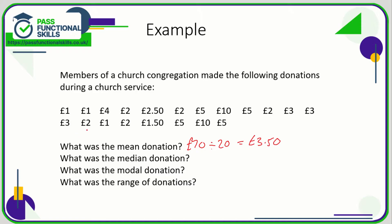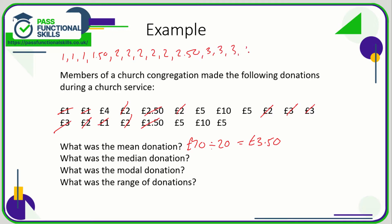For the median I'm going to put these in order. There are three donations of one pound: one, one, one. There's one pound fifty. There are five twos: one, two, three, four, five. There's also a two pounds fifty. There are three threes: three, three, three. There's a four, there are four fives, and there are also two tens.